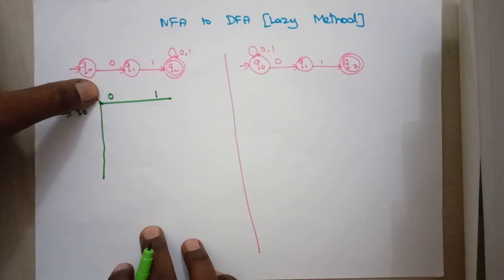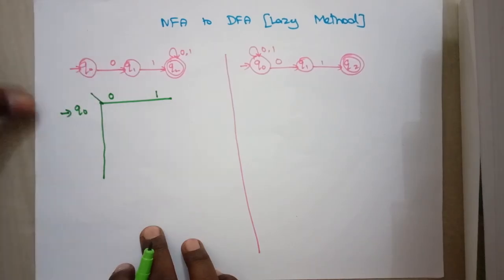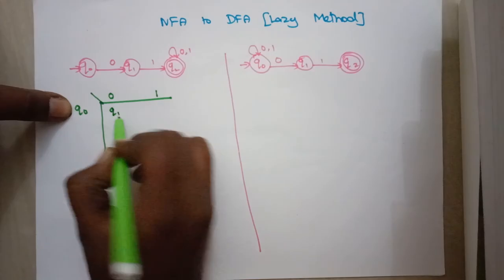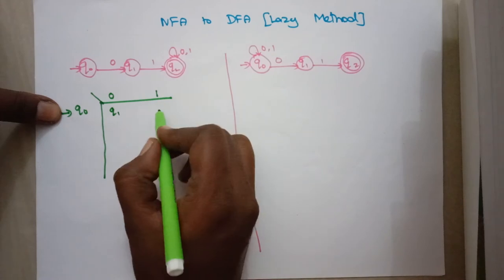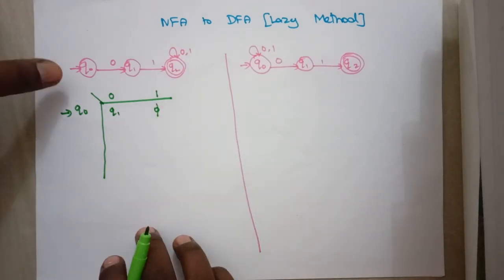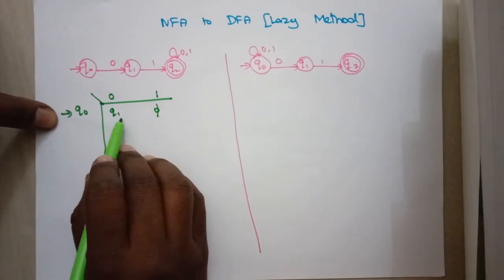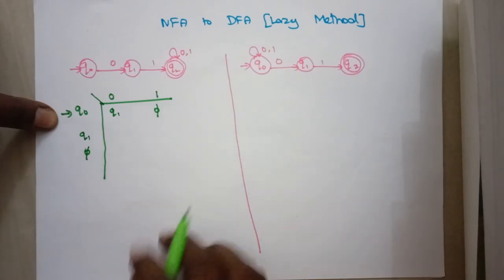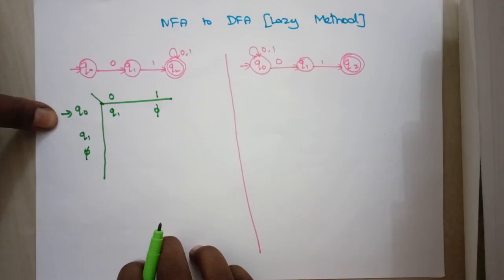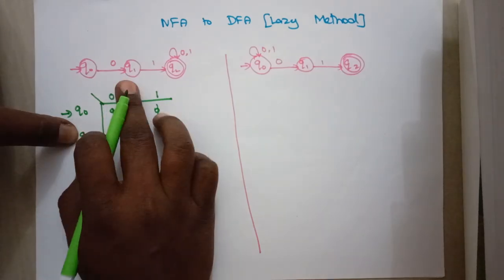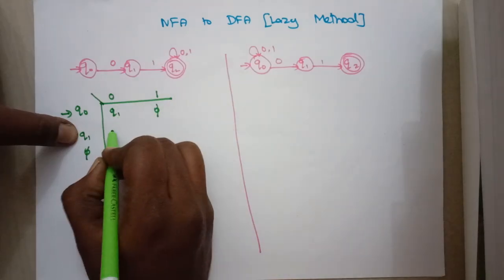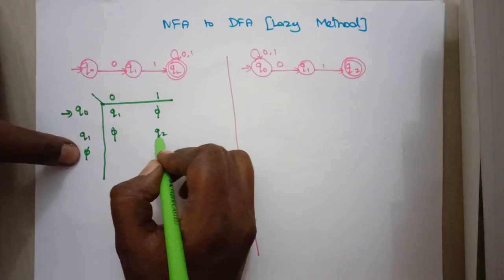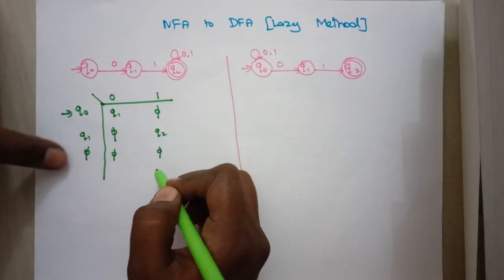The input symbols are 0 and 1. We write transitions for q0: when the input is 0 it goes to q1, and when the input is 1 there is no transition, so we mark it as null. We got a new state q1, so we write transitions for q1. Null also needs to be treated as a state. q1 on input 0 has no transition (null), and on input 1 it goes to q2.